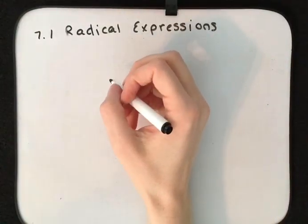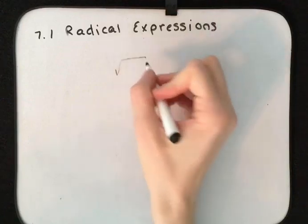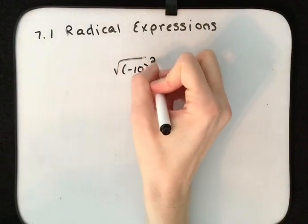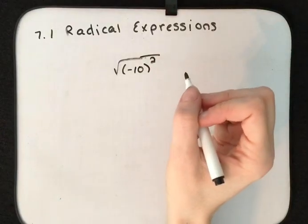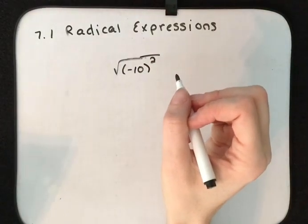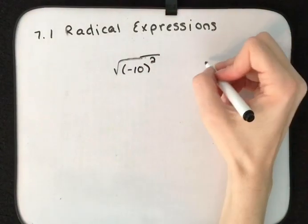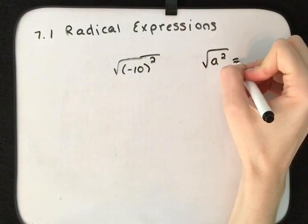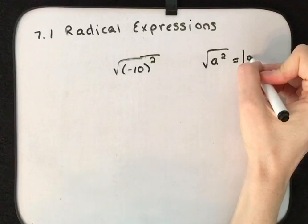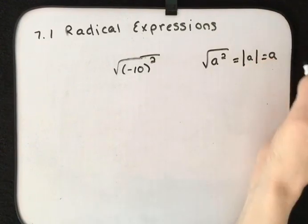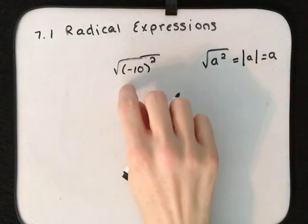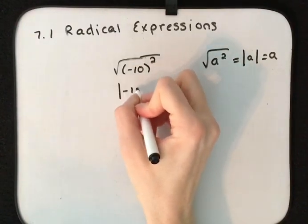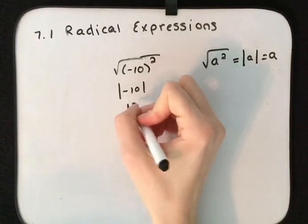If we have the square root of negative 10 squared, we want to consider the absolute value. So if we have the square root of a squared, that's going to equal the absolute value of a, which is going to equal a. So the square root of negative 10 squared is going to give us the absolute value of negative 10, which is going to give us 10.